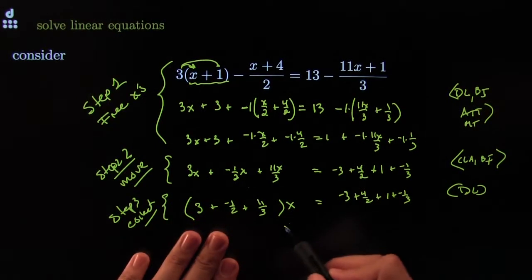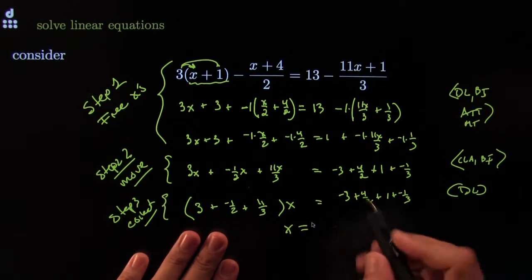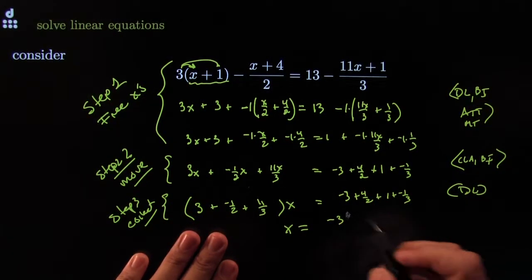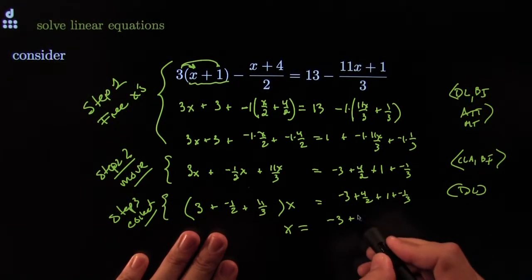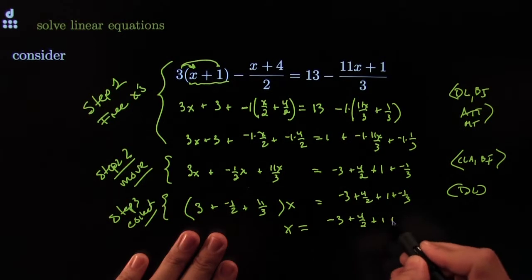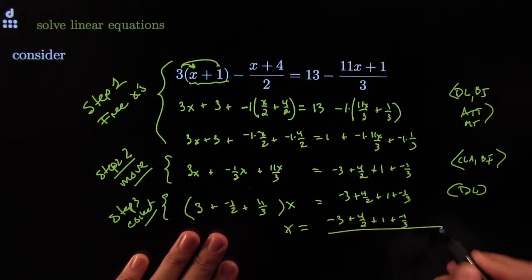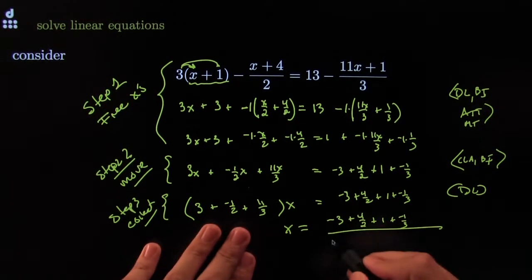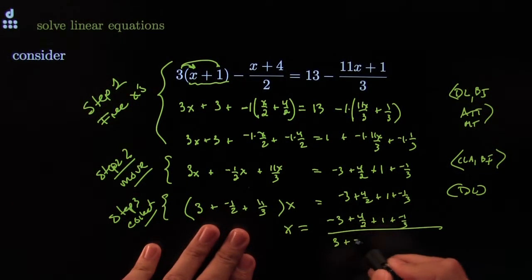Kill the coefficient. X equals negative 3 plus 4 over 2 plus 1 plus negative 1 over 3, all divided by 3 plus negative one-half plus 11 over 3. And we'll be done.